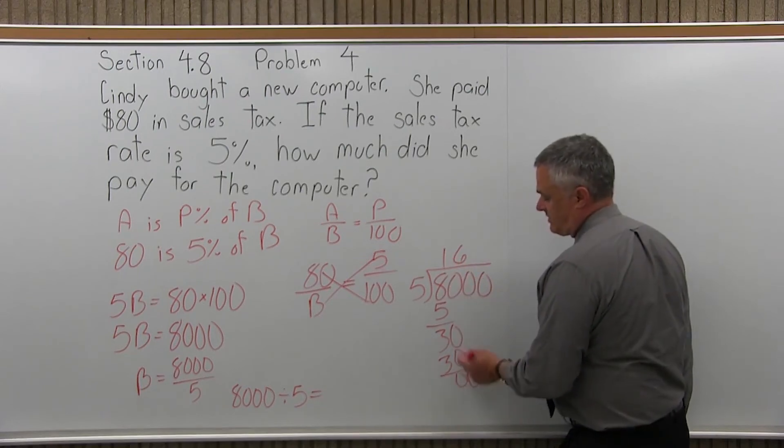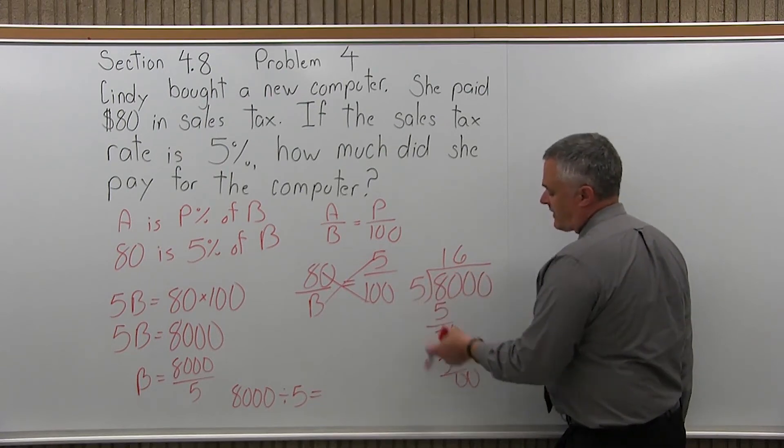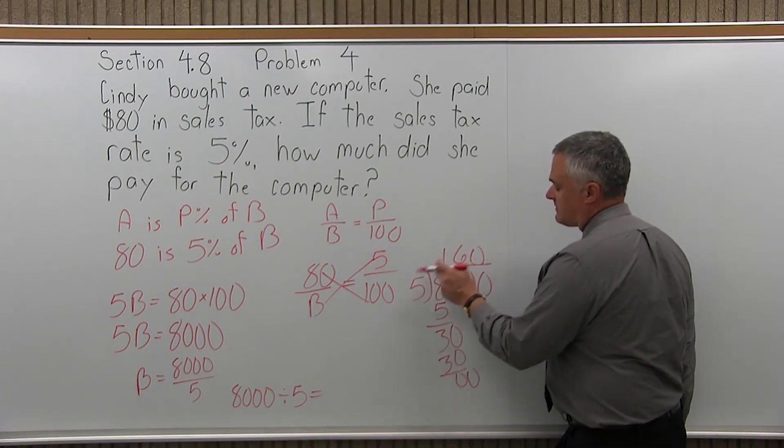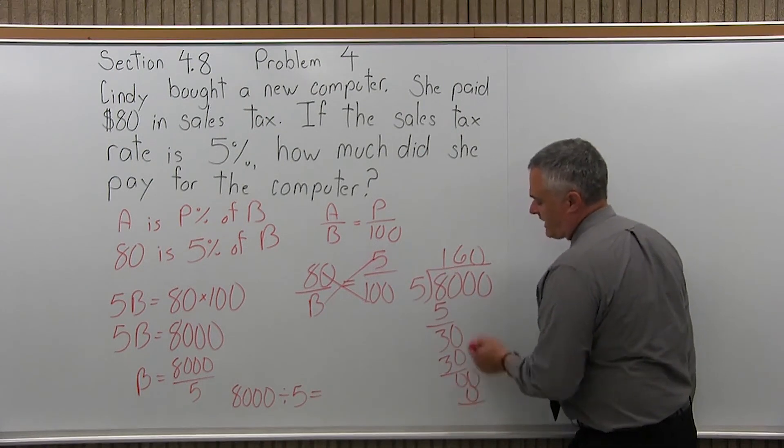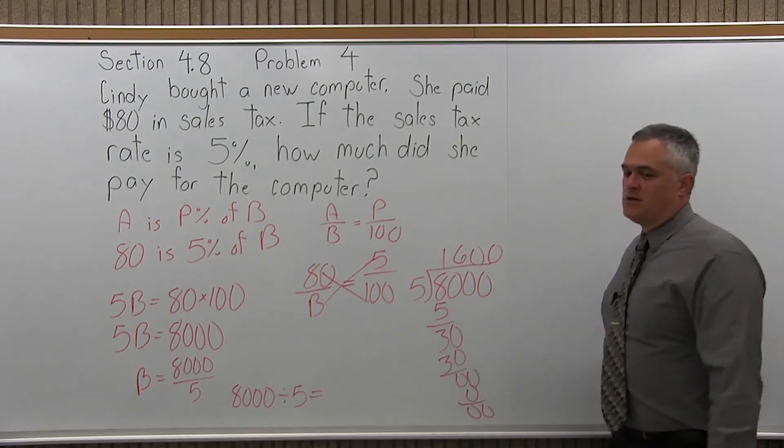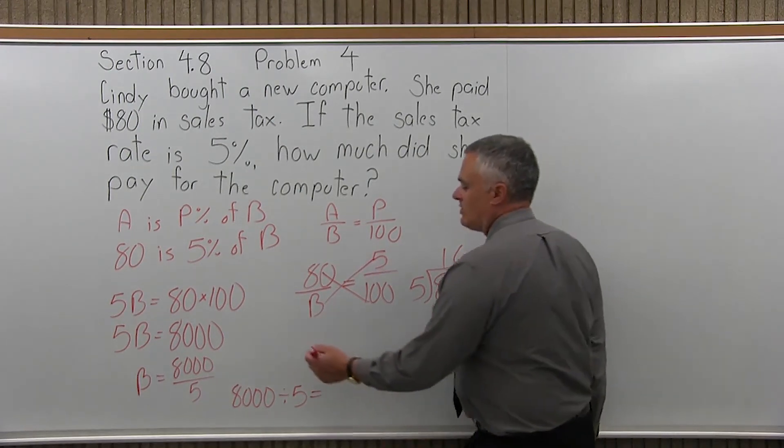So the other zeros are just going to give me a 0. If I bring down the next 0, 5 would go into 0, 0 times. 5 times 0, 0. You don't really have to finish it to the end, but you'd get two more zeros. So the answer is 1,600.